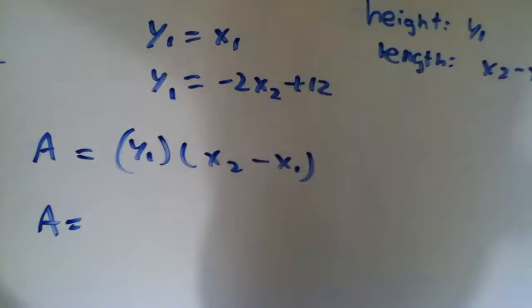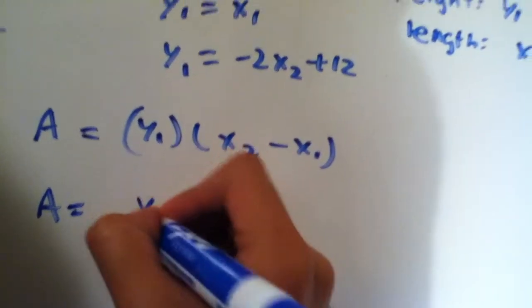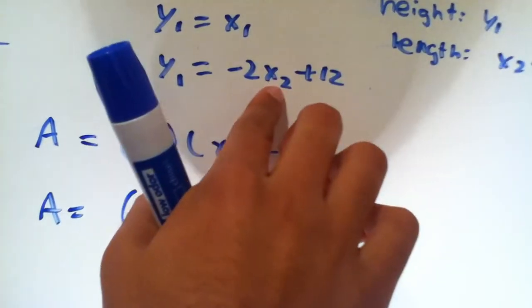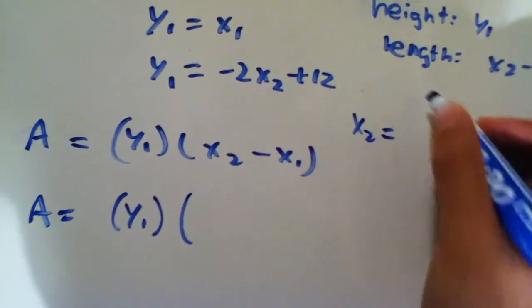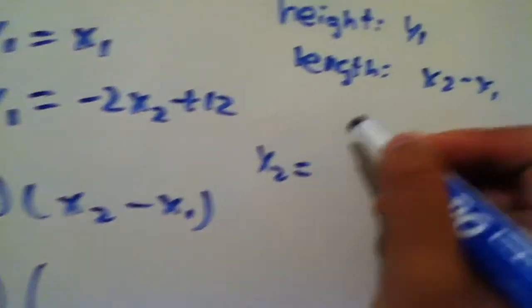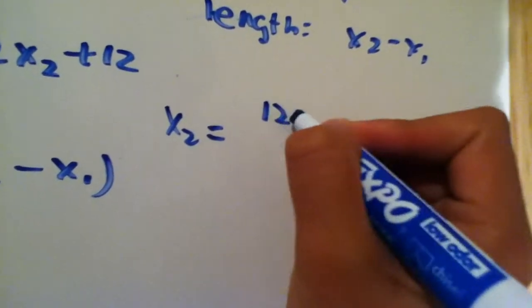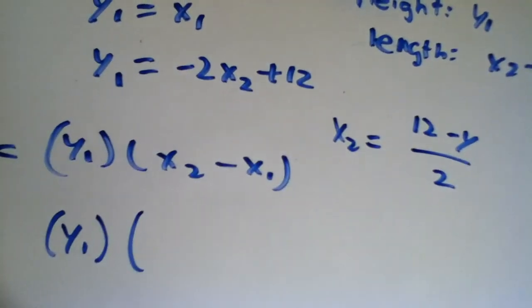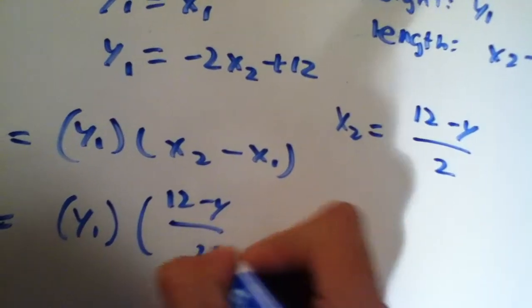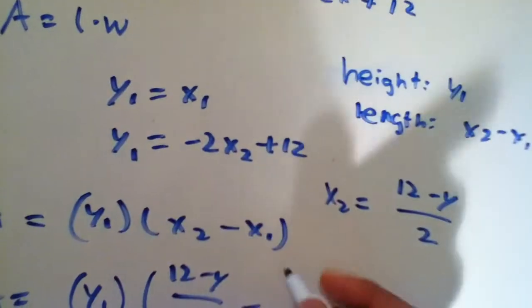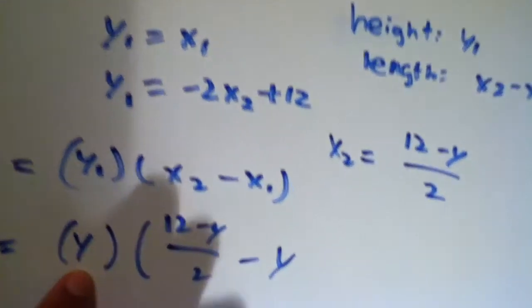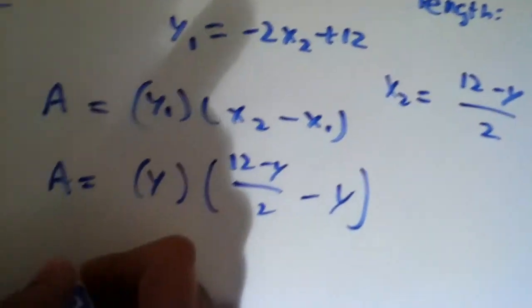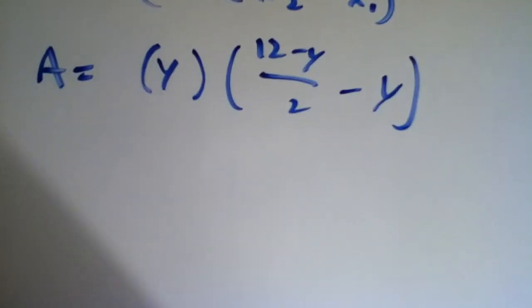And then we get A equals y1 times, if we get here, if we look here, x2 in terms of y is actually 12 minus y, just bring the y here and then over 2. That's what x2 is. So 12 minus y over 2 minus x1. We know it's just y. So actually I'm just going to drop the y1s, because we only have one y in this case. So anyways, that's the area in terms of one variable.